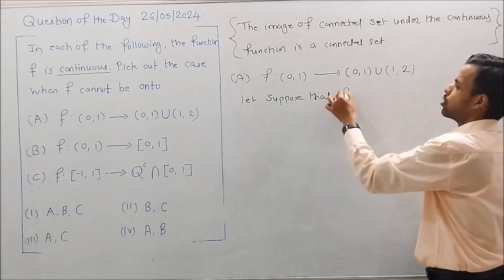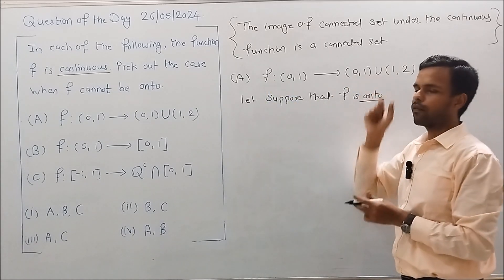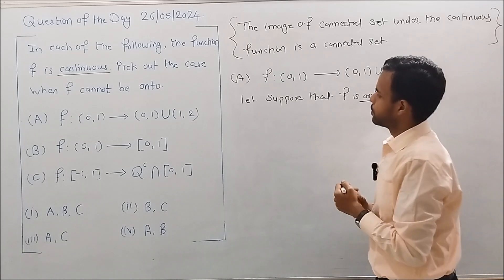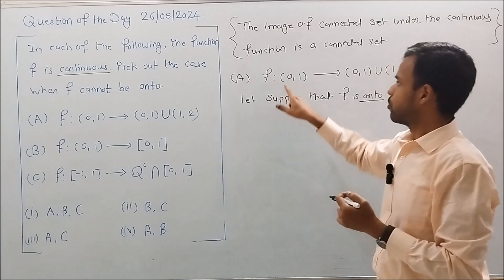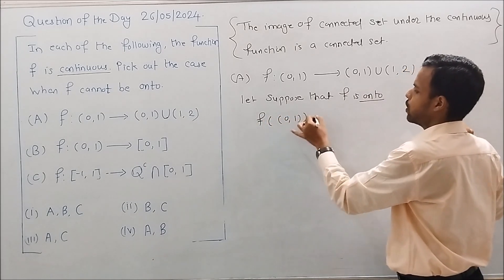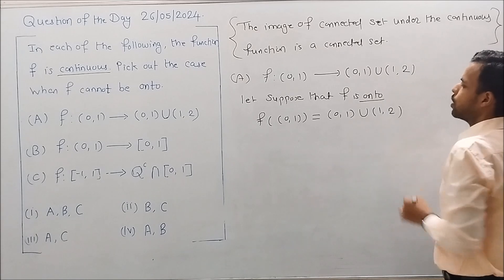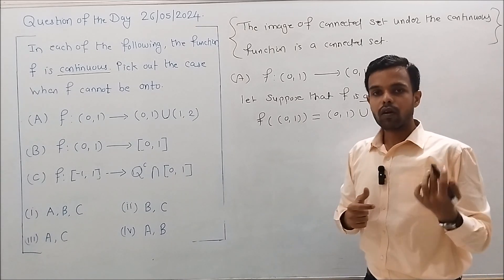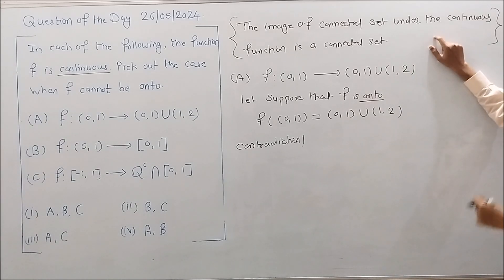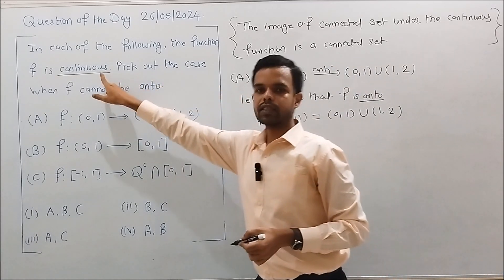Let's suppose that f is onto. We suppose that any such mapping f from open interval (0,1) to this codomain is onto. Then by the definition of an onto (surjective) function, the range must equal the codomain — that is, the image of (0,1) must equal (0,1) ∪ (1,2). But this is a contradiction.